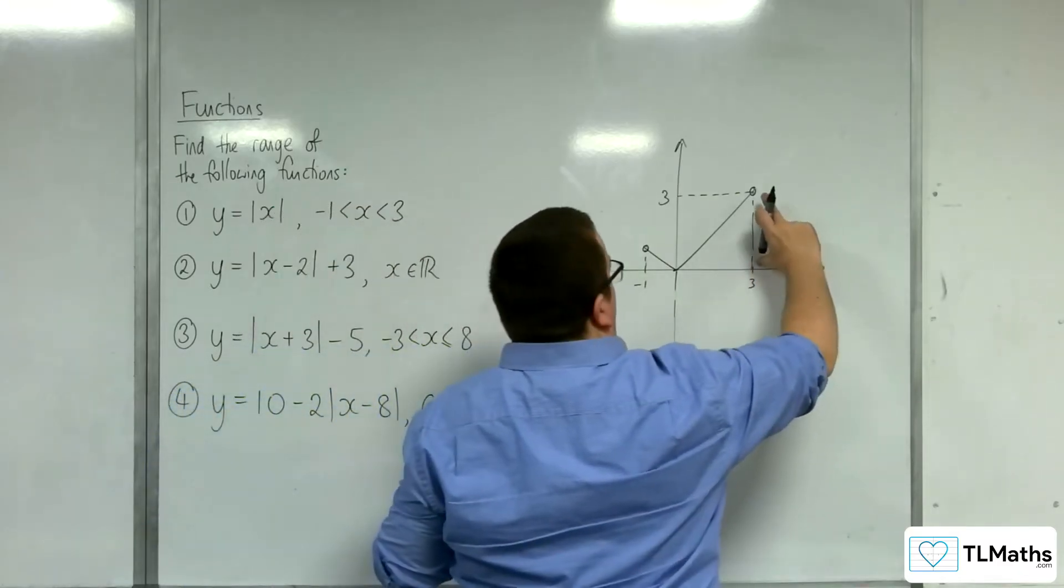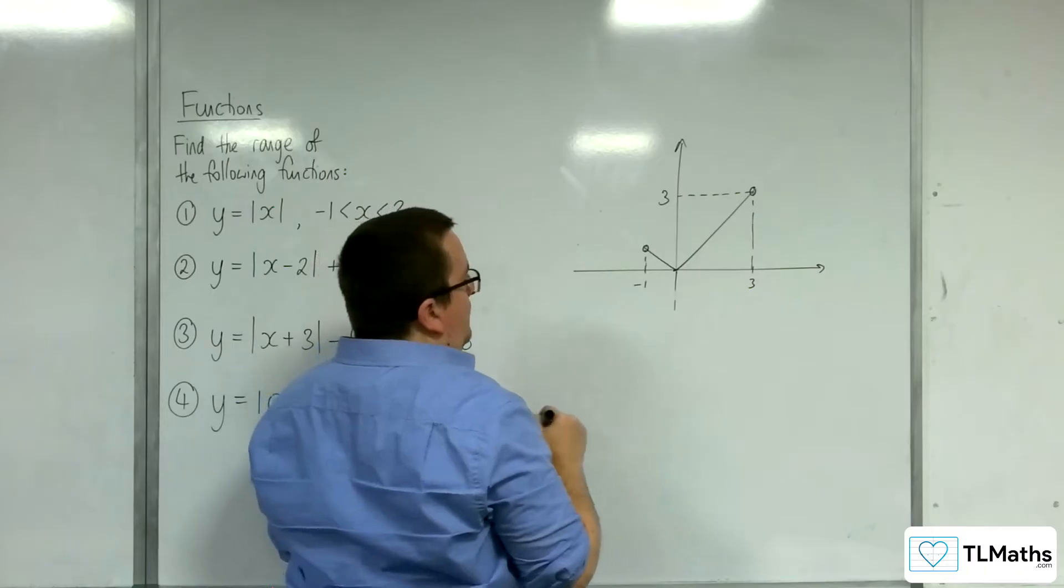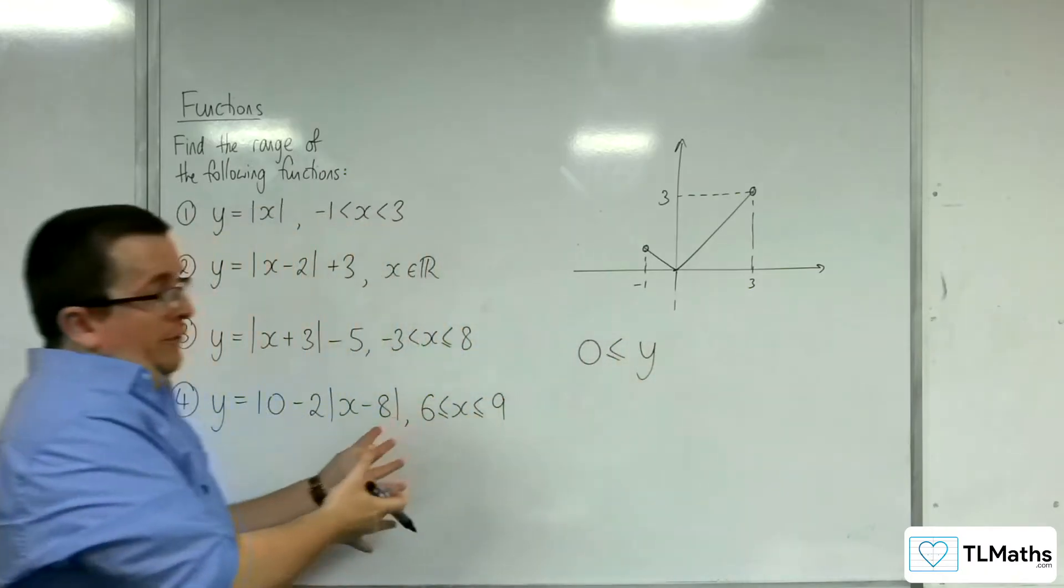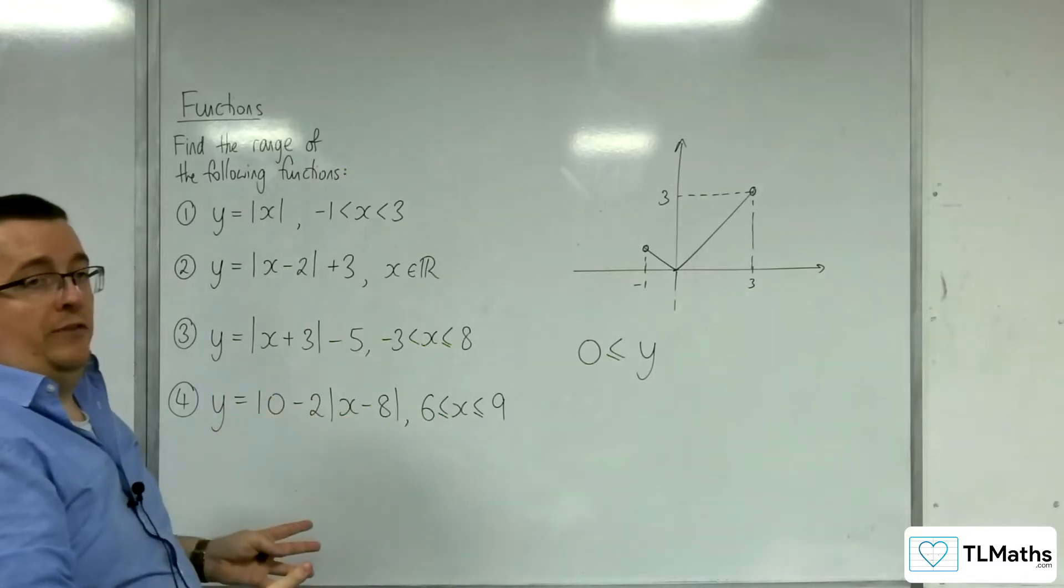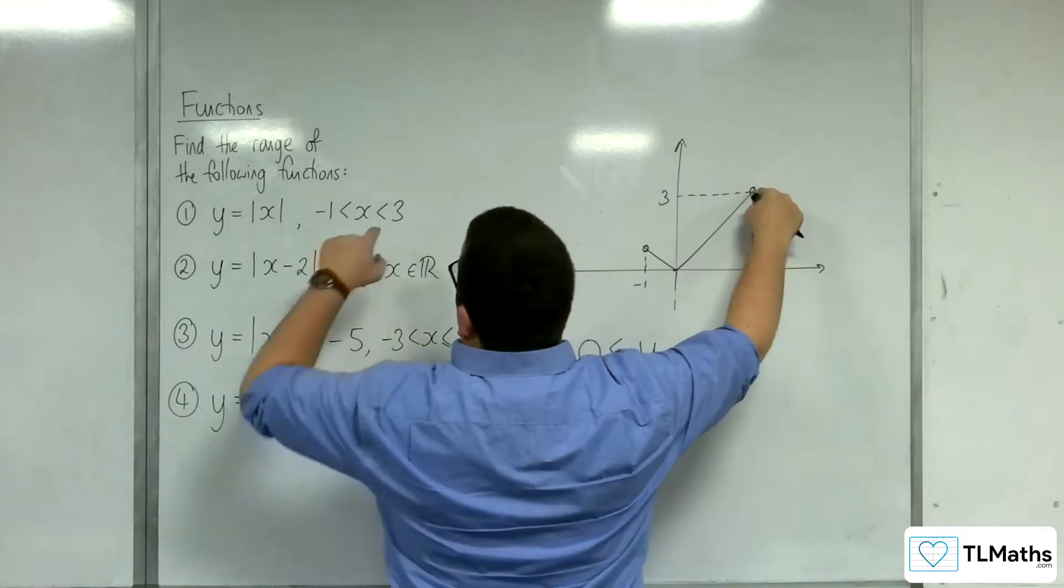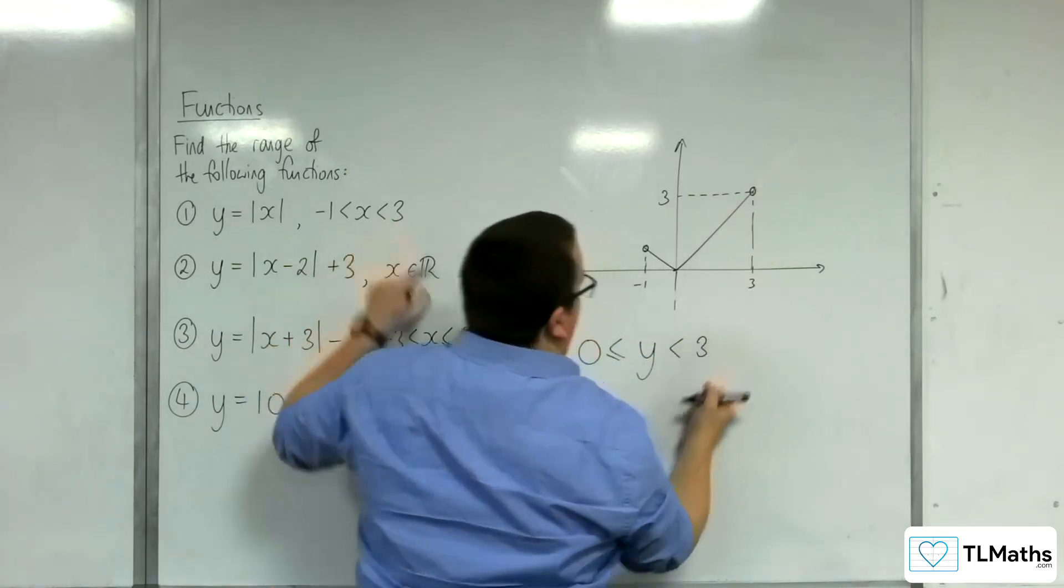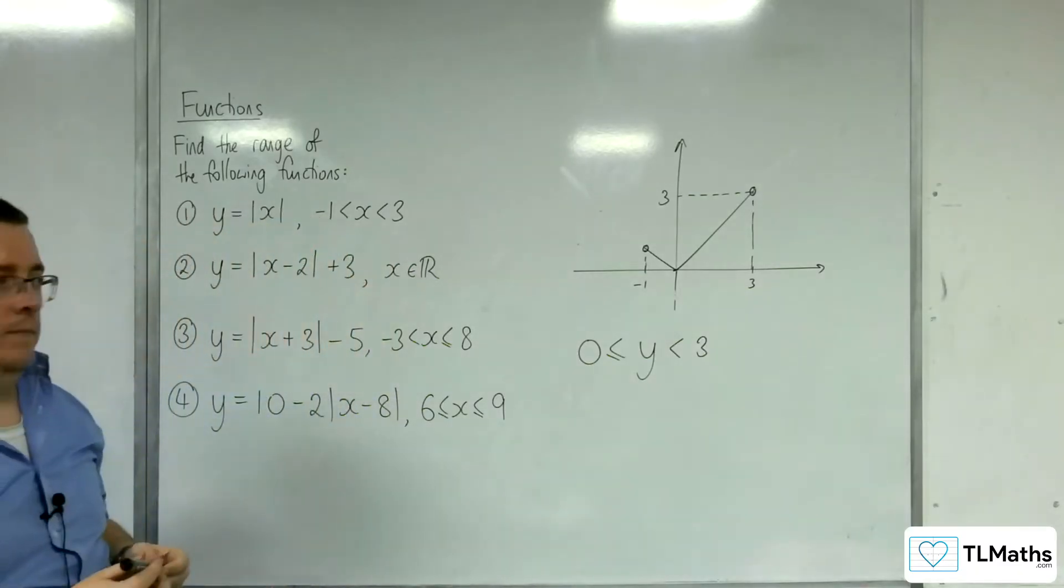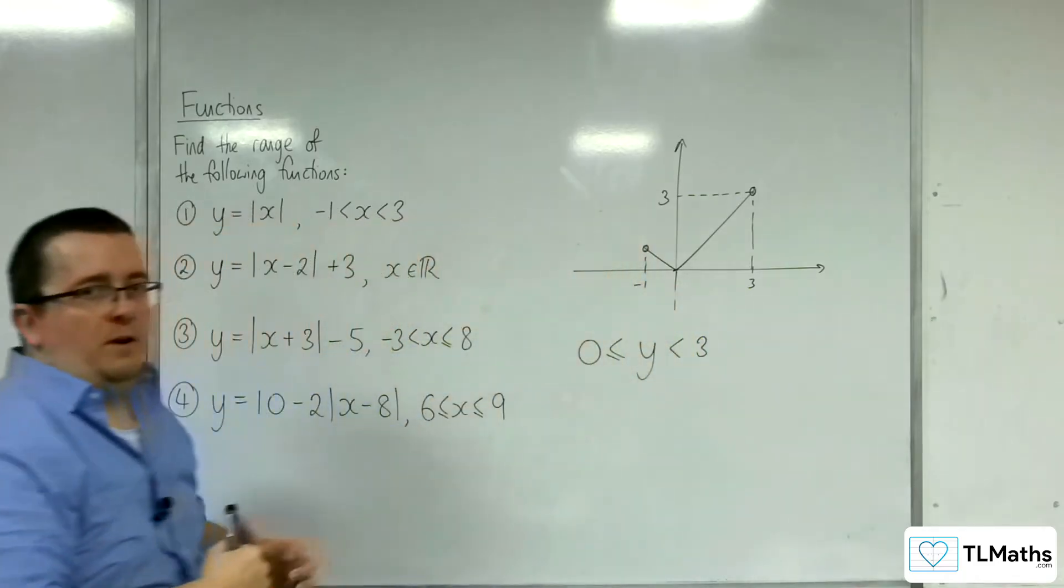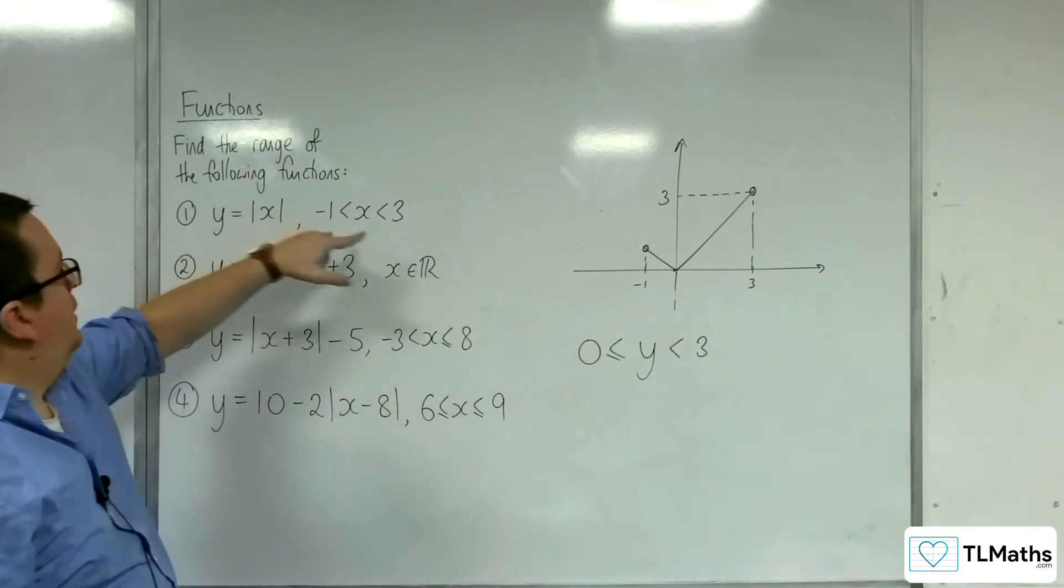And so the range is going from 0, so we want to write this correctly, because we can be at y, at 0. So y is greater than equal to 0, because we can be there. But when x is less than 3, and so we can't actually reach 3, so we can be at 0 all the way up to almost 3, but not quite. So that is the range of our first function.